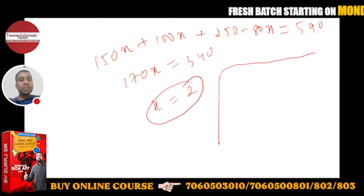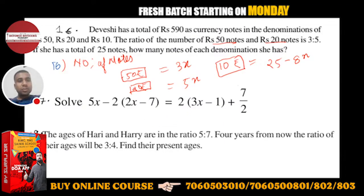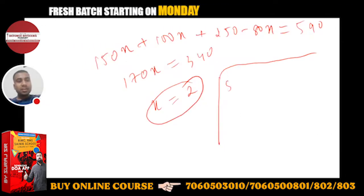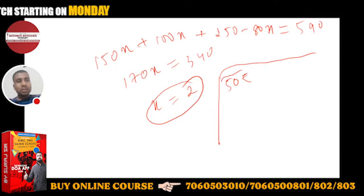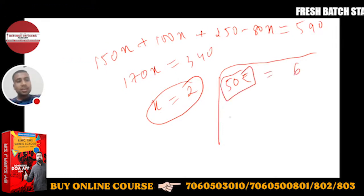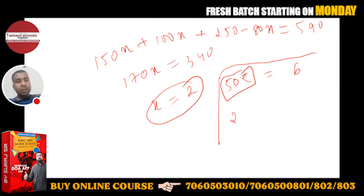50 rupees notes is equal to 3x, so 50 rupees notes is equal to 3x, so this is equal to 6. Okay, so 20 rupees...